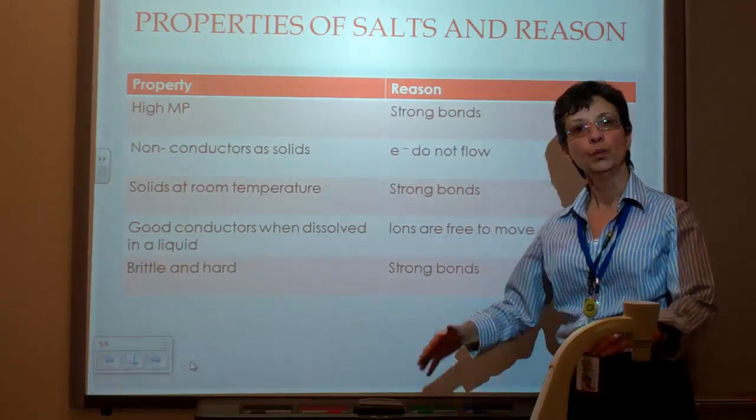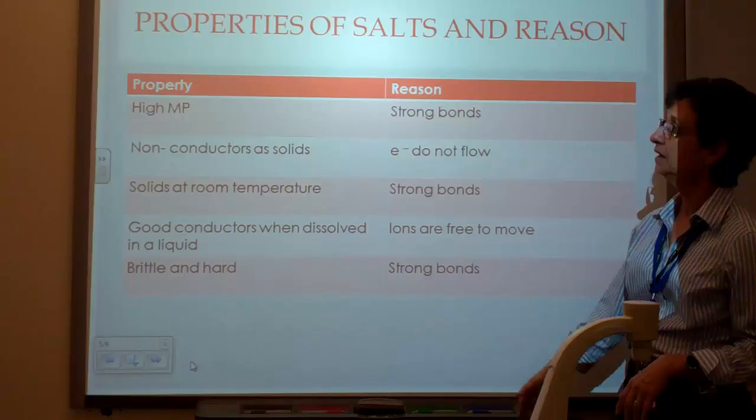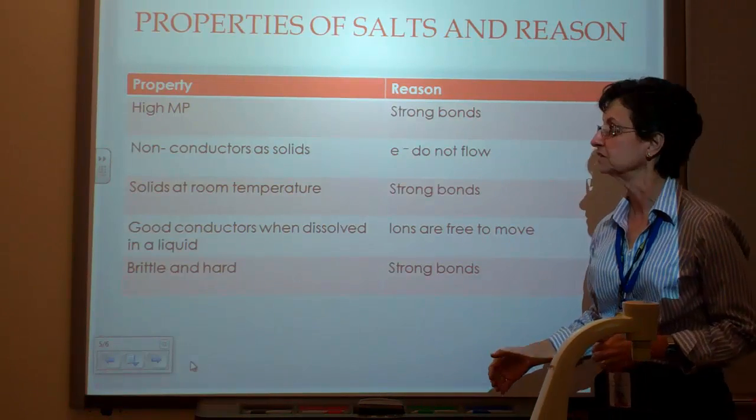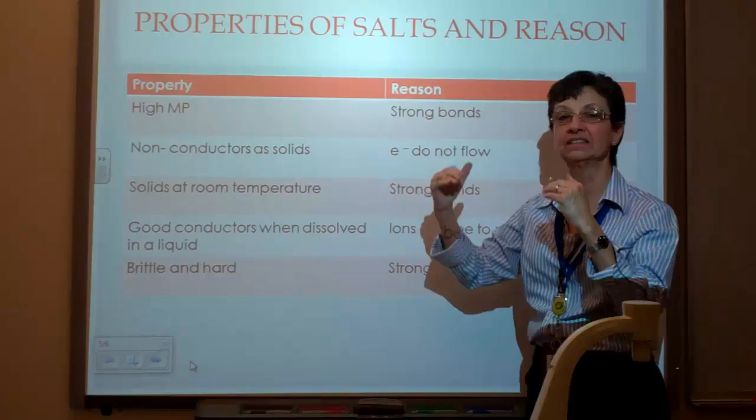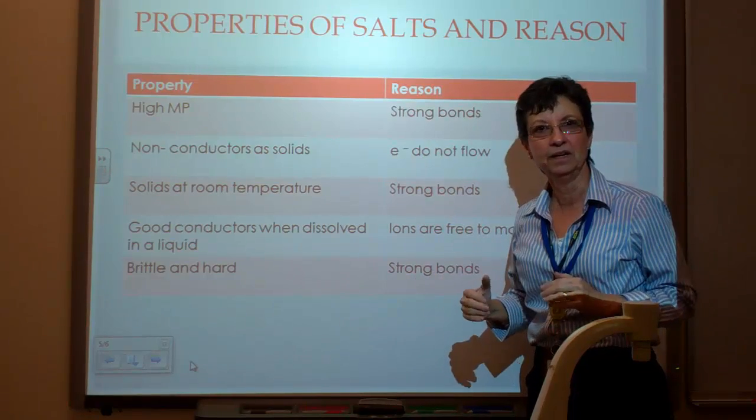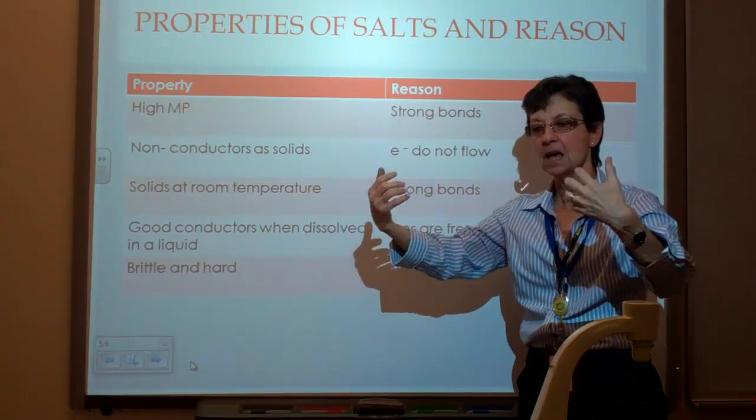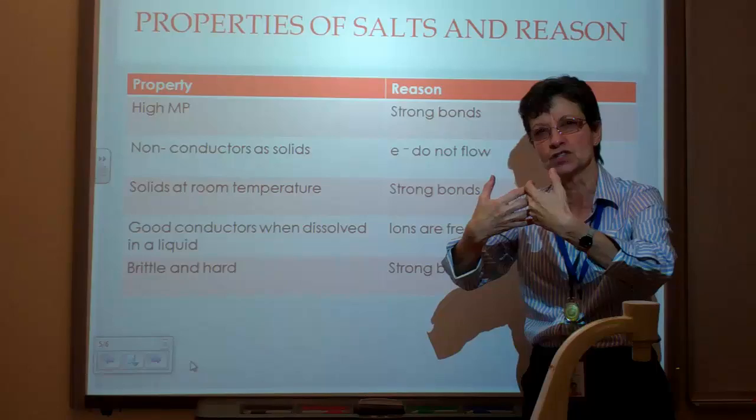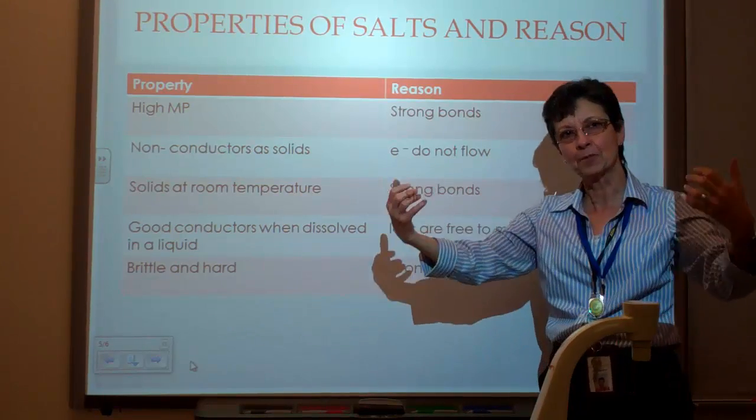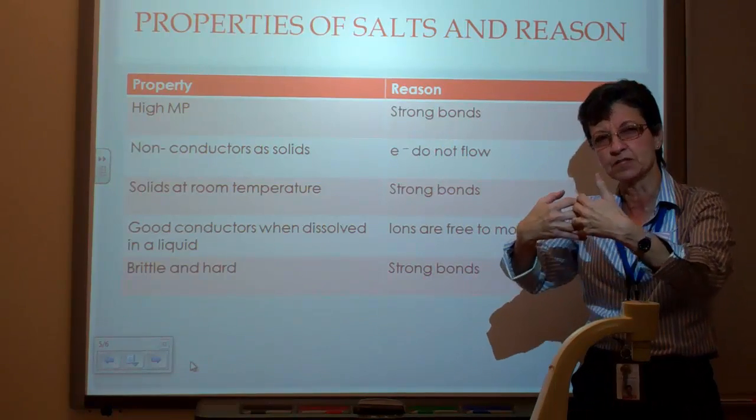We've already looked at some of the properties. And now I have outlined them here. I have a list of them and the reasons for these properties. These salts, ionic salts, have a very high melting point. It's very hard to melt them. The reason for that is that they have very strong bonds. These positive and negative ions have a great force of attraction because of their opposite charges. So they're very hard to separate. So they have a very high melting point because of those very strong bonds between those ions.